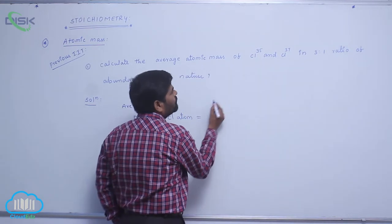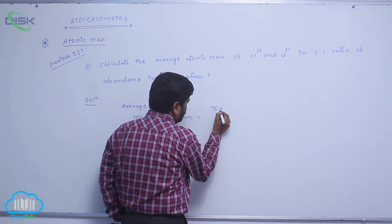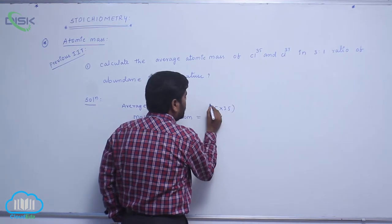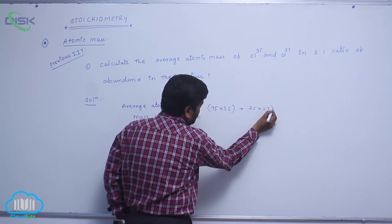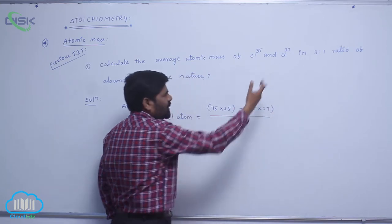Therefore, the formula is 75 times 35 plus 25 times 37, divided by the relative ratio.